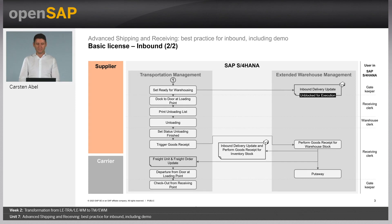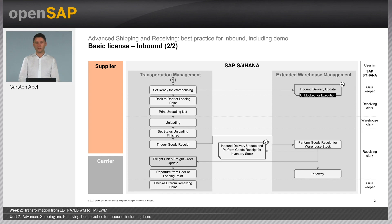After the Administrative Goods Receipt process is done, ready for warehousing can be set and the inbound delivery gets updated and is then unblocked for execution. That means the truck is then driving to the respective unloading point and can be unloaded. In inbound, this is the same process as in outbound, but with unloading. That means we dock to the door at the unloading point, print the unloading list, take the pallets from the truck to the respective staging area, and the unloading finish status is set. After this, the goods receipt can be triggered. With the goods receipt posting, the warehouse stock is increased. After that, we can also check out the freight order and depart from the respective loading point. In the warehouse itself, put away is done and the complete inbound process is finalized.